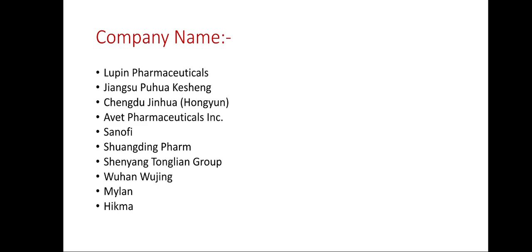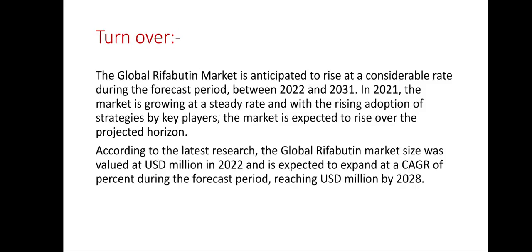Brand names include Rifadin, Rifamactane, and Mycobutin. Company names include Lupin Pharmaceuticals, Avet Pharmaceuticals, Sanofi, Mylan, and Hikma. The global rifabutin market is anticipated to rise at a considerable rate during the forecast period between 2022 and 2031. In 2021, the market was growing at a steady rate and with the rising adoption of strategies by key players, the market is expected to rise over the projected horizon.